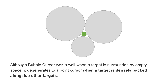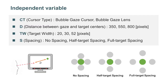The bubble gaze lens solves this shortcoming by using a magnifying lens to enlarge the target. There were four independent variables: cursor type, distance between gaze and target centers, target width, and spacing.